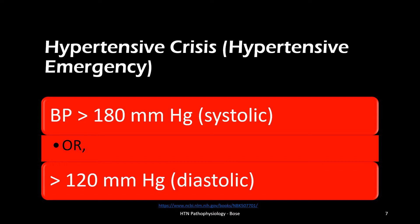Causes of malignant hypertension include medication non-compliance, renovascular diseases such as renal artery stenosis and conditions like polyarteritis nodosa and Takayasu's arteritis, renal parenchymal disease such as glomerulonephritis, endocrine disorders, pediatric cardiac conditions such as coarctation of the aorta, cocaine and other drug use, and CNS damage such as head injury, including hemorrhagic strokes. Hypertensive emergencies occur when a relatively rapid rise of blood pressure occurs within a short period.